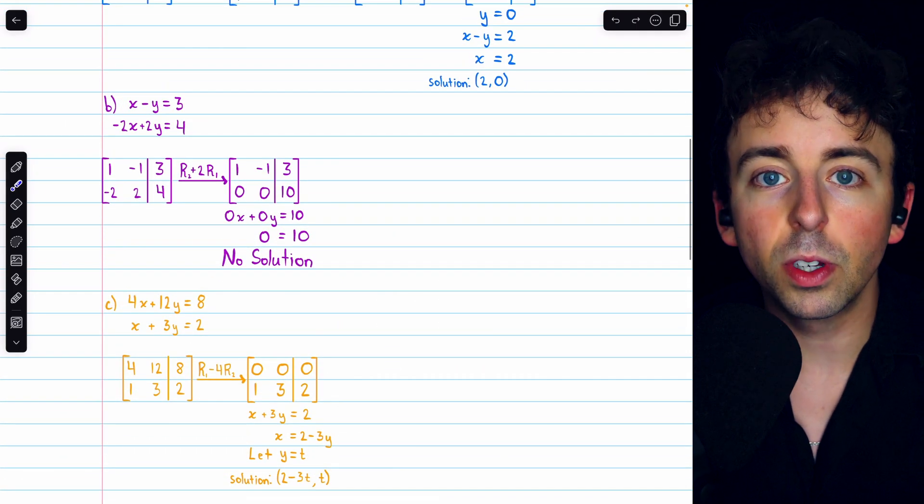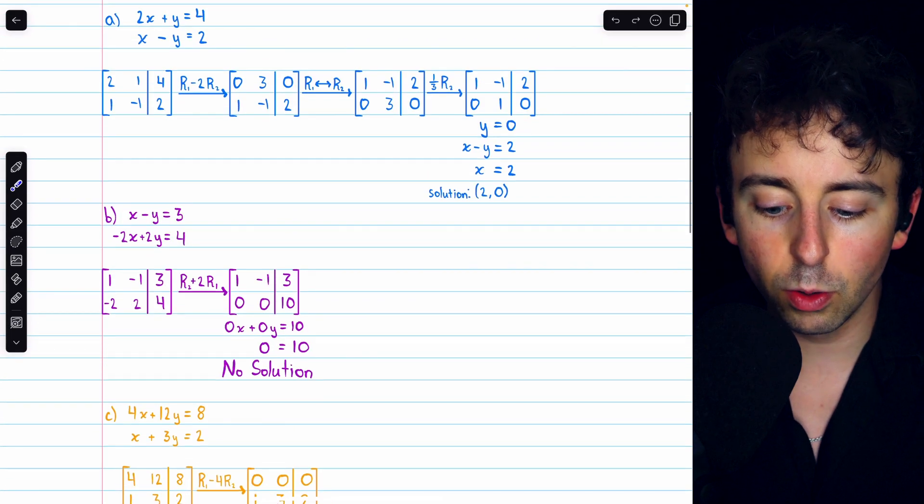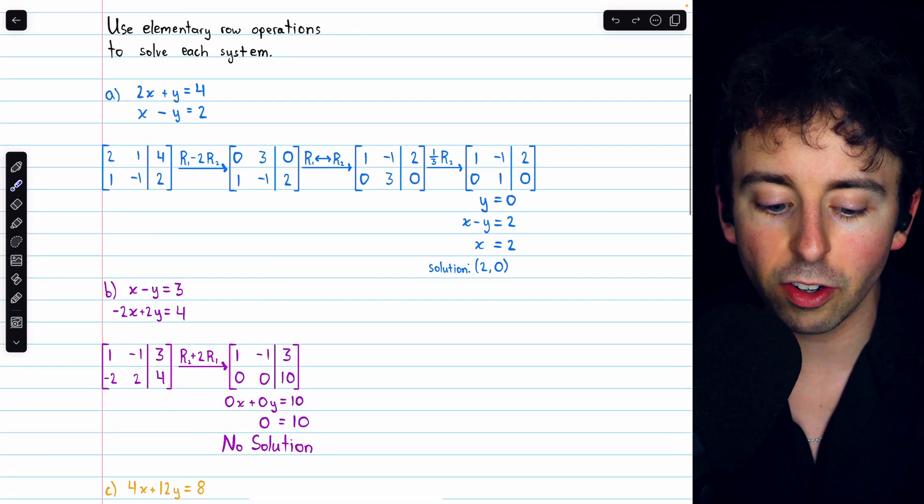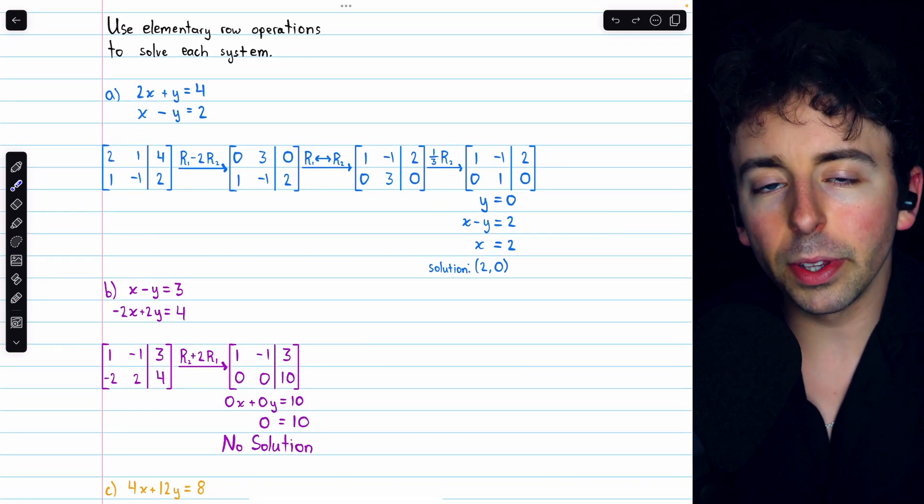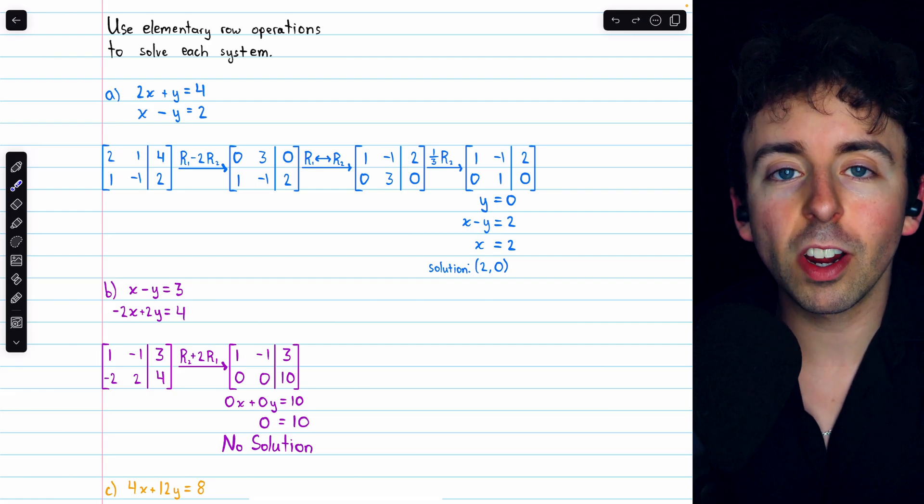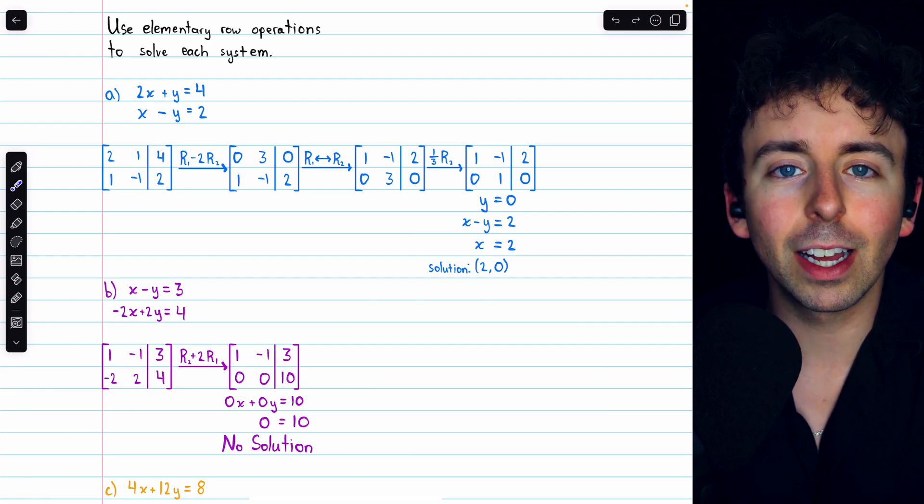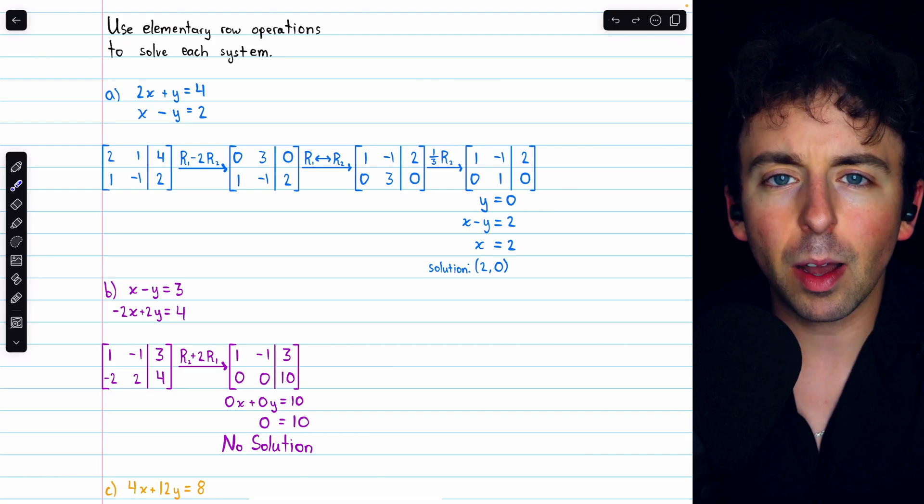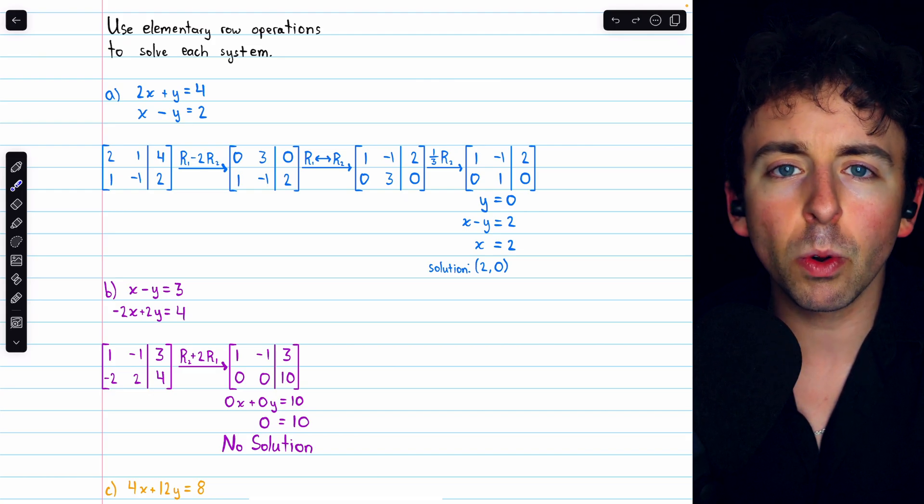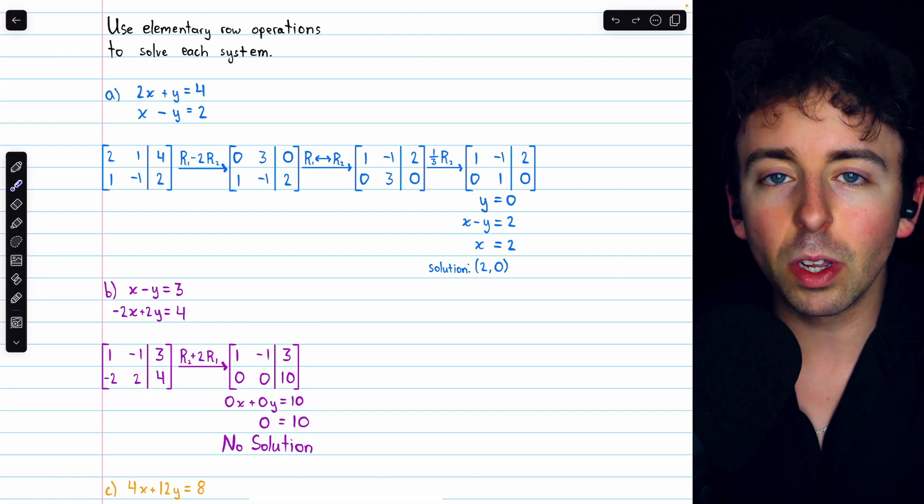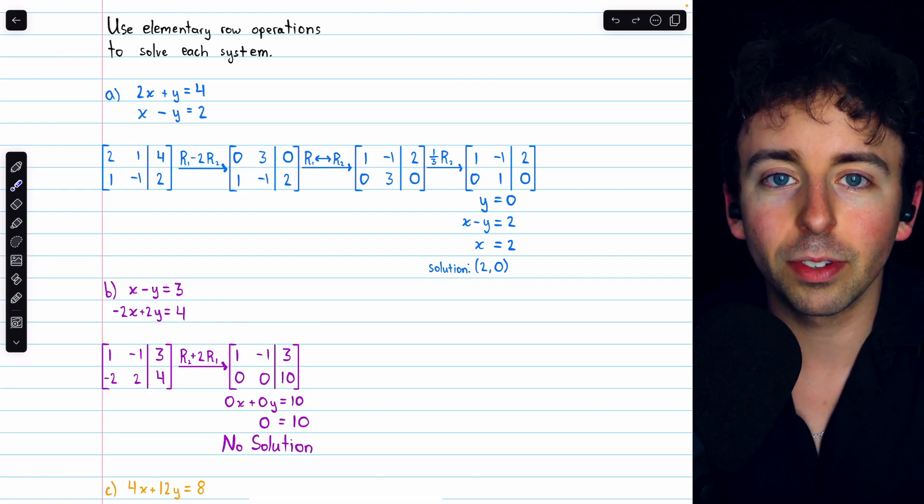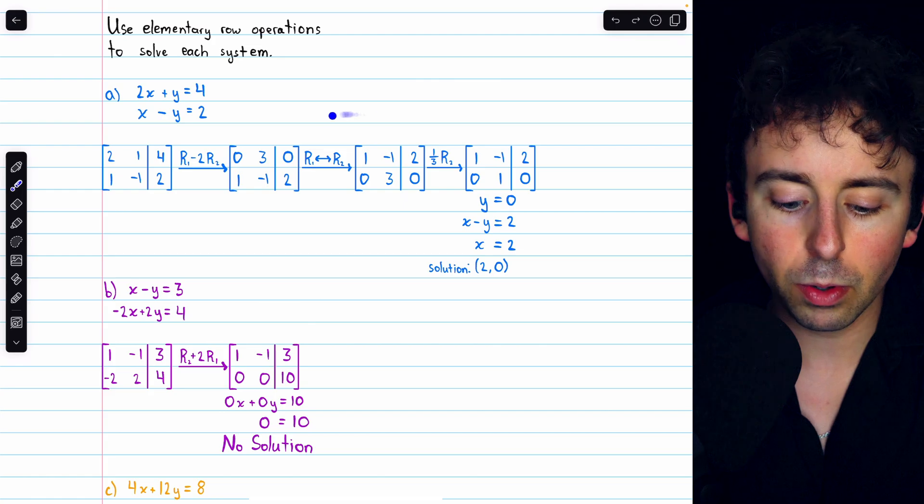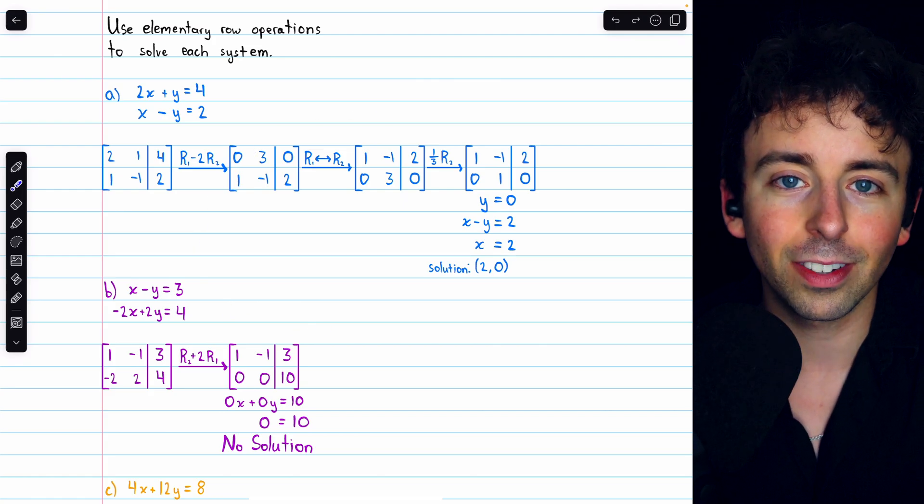So those are all the possibilities you could encounter when using matrices to solve a system of two equations and two unknowns. Let me know in the comments if you have any questions, and be sure to check out my linear algebra course and linear algebra exercises playlists in the description for more. If you find my videos helpful, please consider supporting what I do by joining Wrath of Math as a channel member. You can get early and exclusive access to videos and extra practice, and if you join at the premium tier or above, you can access all of the lecture notes in the course.